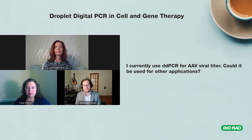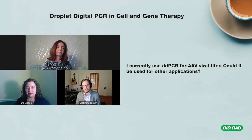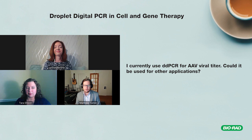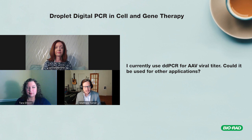ddPCR is so important for AAV titering due to its high precision and accuracy. If this gene therapy is the therapeutic going to patients, it's critical that we have high precision and high confidence in the amount being delivered. Beyond AAV, other applications include host cell DNA detection in biologic workflows, copy number variation in native cell lines, and CAR-T therapy experiments.